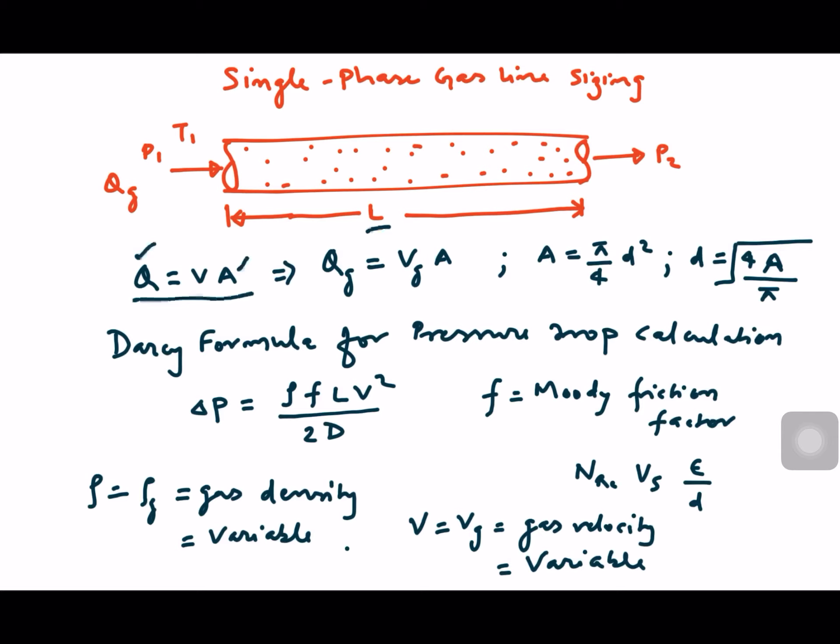For a liquid line, we normally keep the velocity less than 4.5 meters per second for continuous service. For intermittent services we keep the liquid line velocity below 3.3 or 3.5 meters per second. We also use the pressure drop calculation formula, which is the Darcy formula: ΔP = ρfLV²/2D, where ρ is the density of the fluid, f is the Moody friction factor, L is the length of the pipe, V is the velocity, and D is the internal diameter of the pipe. The Moody friction factor is calculated from the Reynolds number and the e/D value.